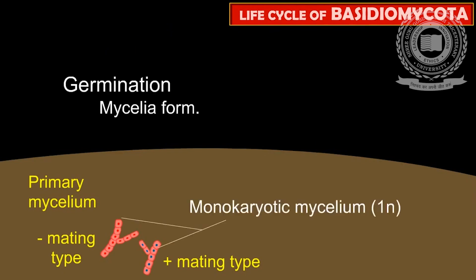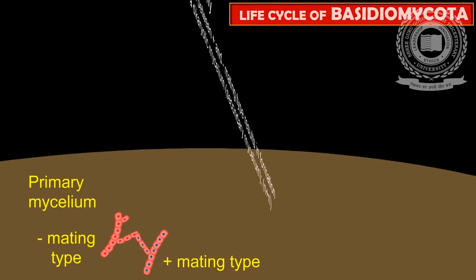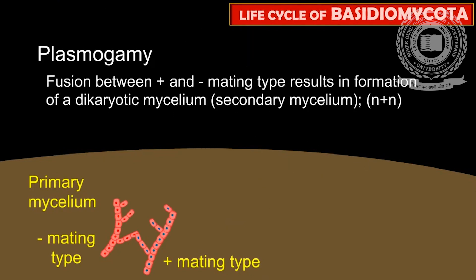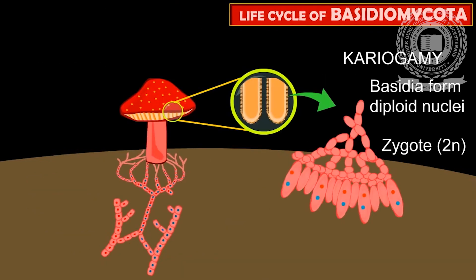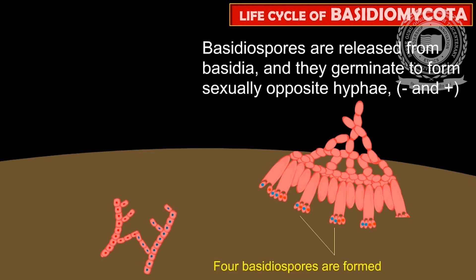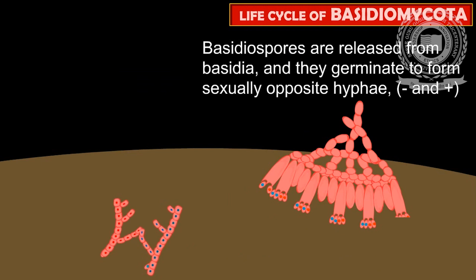In sexual reproduction, compatible strains mate and haploid strains fuse to form a diploid. It consists of plasmogamy (cytoplasmic fusion), karyogamy (union of two nuclei) and meiosis (haploid formation). The number of chromosomes is reduced to half, preceded by fusion of the protoplasm as well as nuclei of two cells.